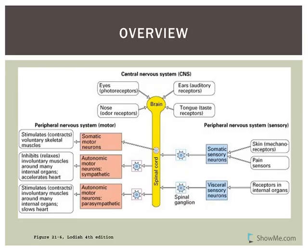We'll be discussing the brain structures first, and then we'll also be looking at the cranial nerves associated with the brain. The brain is going to be involved in learning and memory, controlling muscle movements, interpreting sensory information, and it will be involved as an integration center in cranial reflexes.